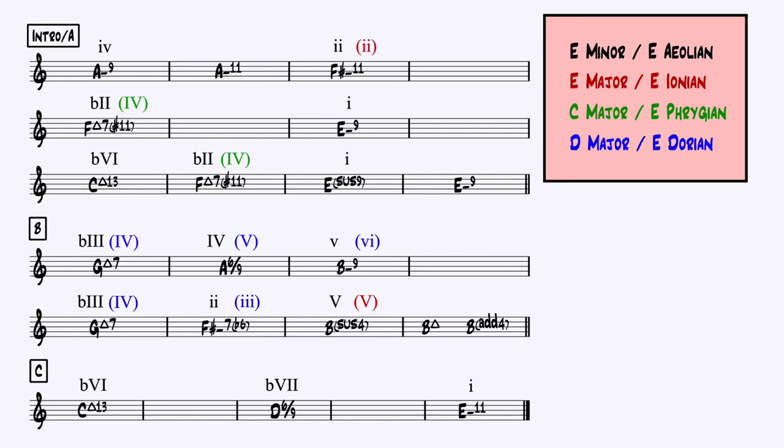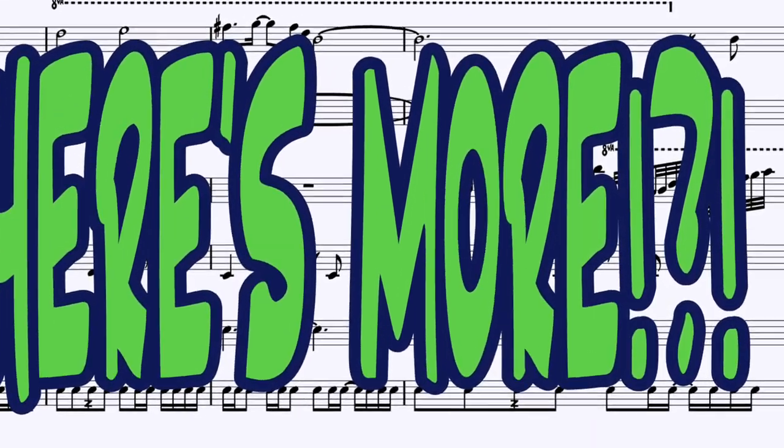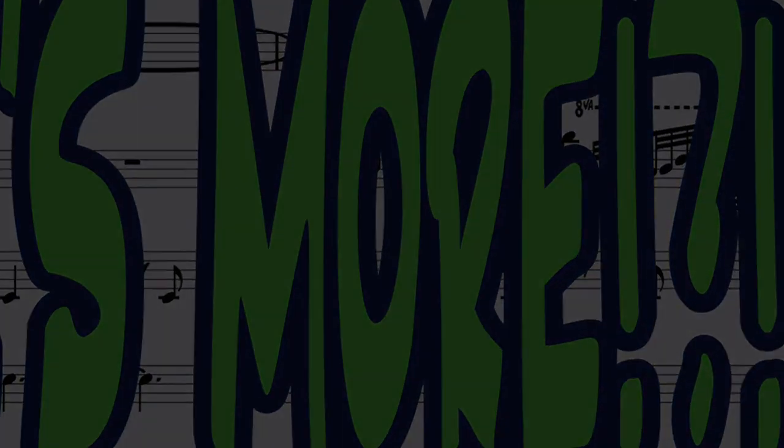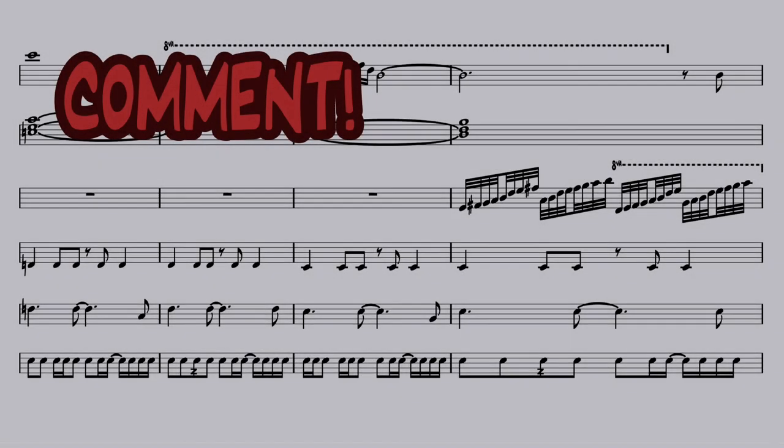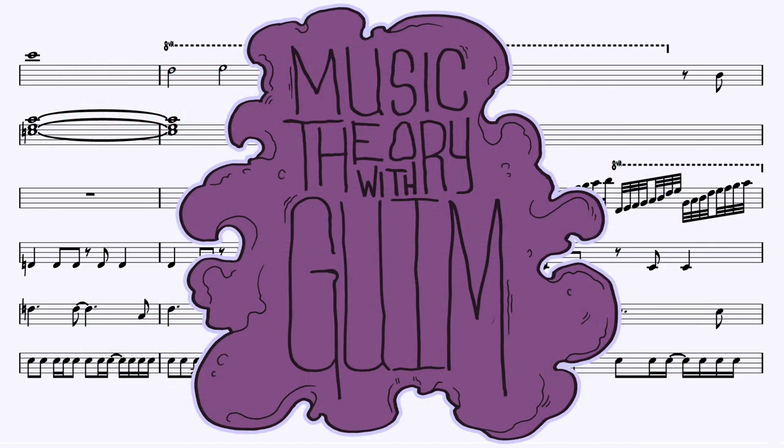And so with that, we've completed the task of analyzing all the chords in terms of Roman numerals. But that's just half the story. There's still a whole lot of information we have to discuss to really understand what Mitsuda's doing within this theme. And we're going to be doing that in part 2. But until then, feel free to drop a comment below if you've got any thoughts or any questions about anything. Otherwise, this has been Music Theory with Gim, and I'll catch you next time.